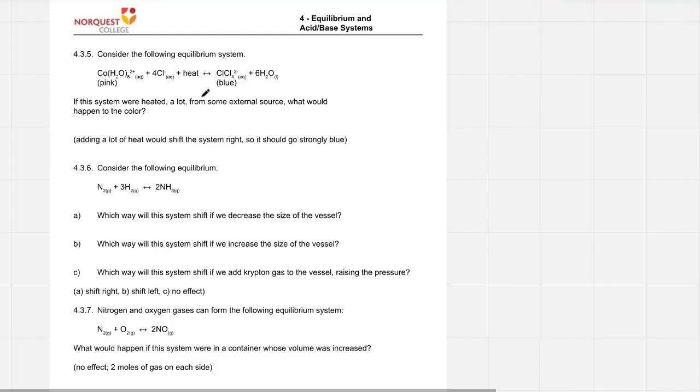It's endothermic because the heat's on the left. If this system were heated from some external source, we're adding heat. That's our stress. The system will react by trying to consume heat, so it will use up all the left-side stuff and produce more right-side stuff.